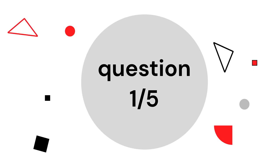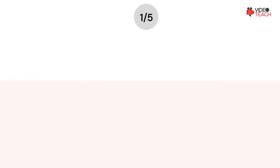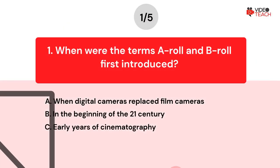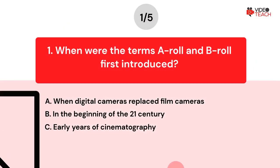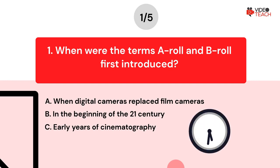Question number one: When were the terms A-Roll and B-Roll first introduced? Option A: When digital cameras replaced film cameras. Option B: In the beginning of the 21st century. Option C: Early years of cinematography. Now you have about 15 seconds to think about your answer.